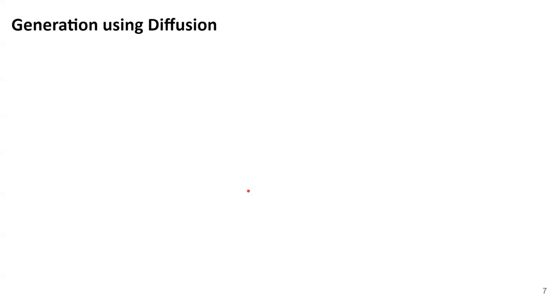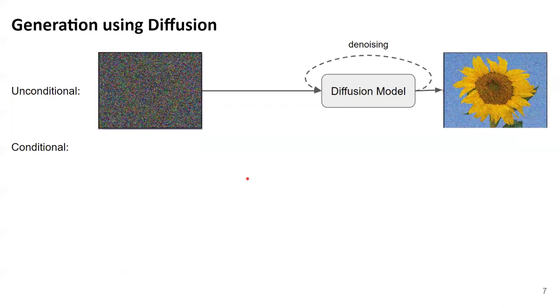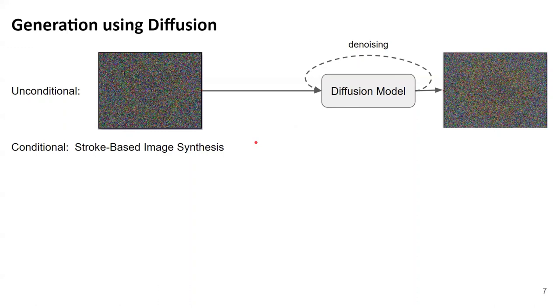In this section we'll cover the technical details of SDEdit and how it works. You already understand what diffusion models are and how unconditional image synthesis works: you train a diffusion model to progressively denoise a noisy input to generate an image. But for conditional image synthesis and other operations, you usually cannot use the same diffusion model. Let me give you some examples of why not.